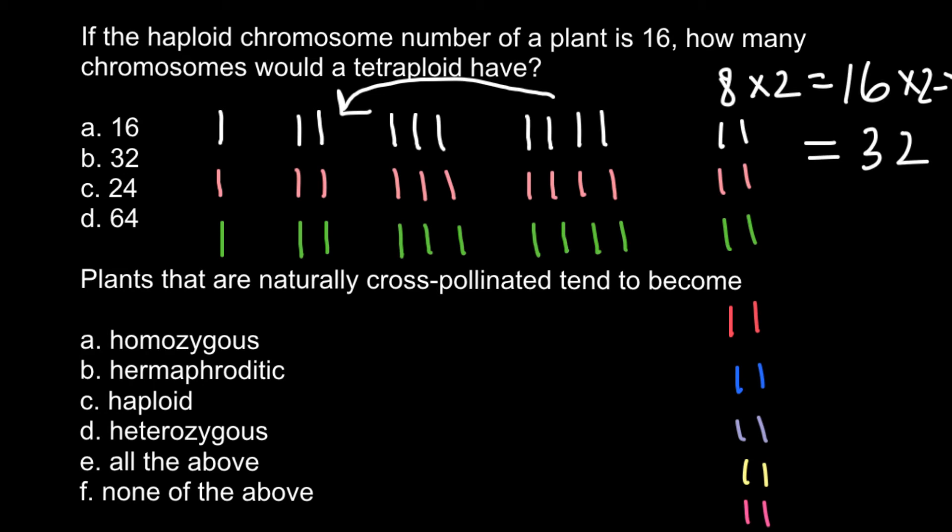In a tetraploid organism we would find 32 chromosomes, not 64 as you might initially think. One more example to clarify haploidy: most domesticated plants and grains are polyploid. For example, rye is hexaploid, and its haploid number found in gametes would be triploid — half the number of the hexaploid plant. Another example is strawberry, which can be octaploid or decaploid, and its haploid number would then be tetraploid or pentaploid respectively.